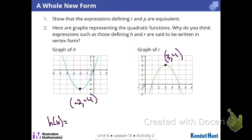It's h of x equals? x plus 2, x plus 2 minus 4. I can just look at the graph and get it. So r of x equals x minus 3 squared plus 4.